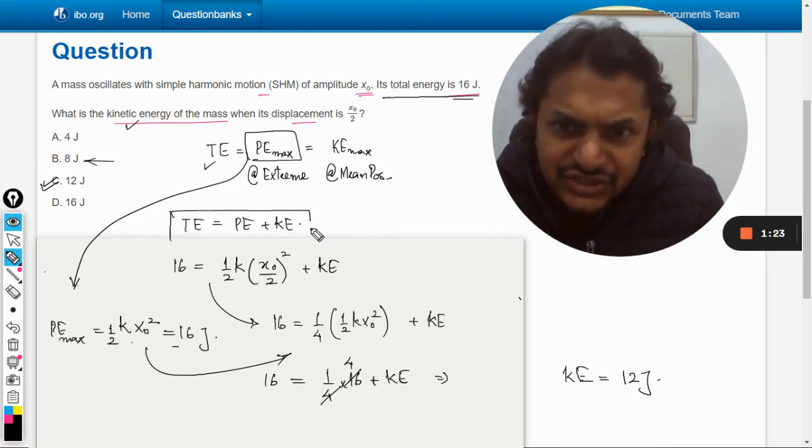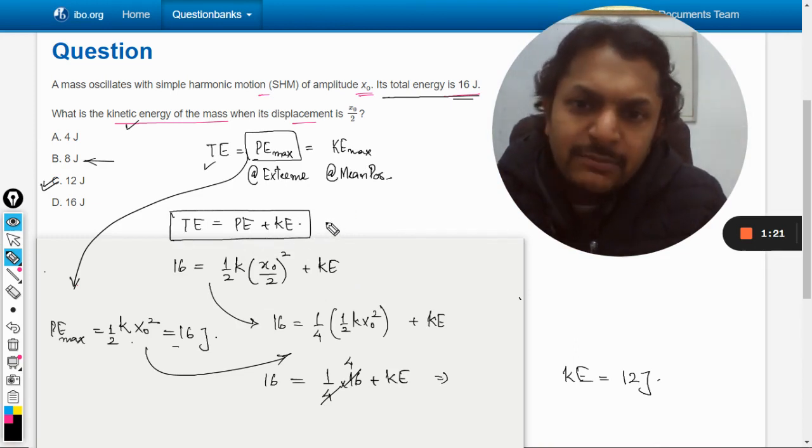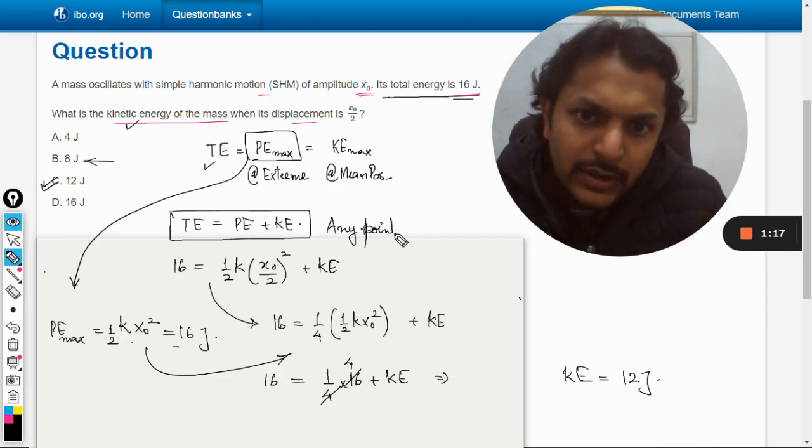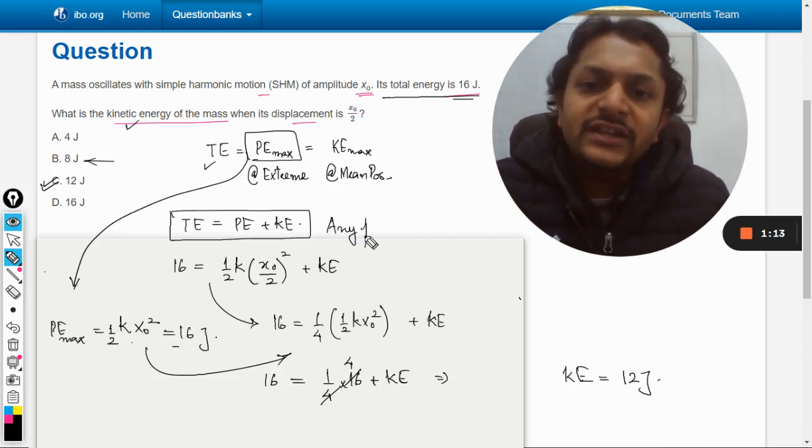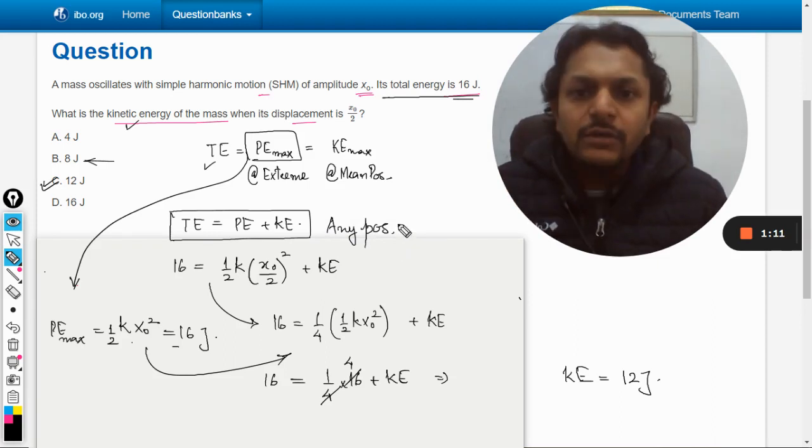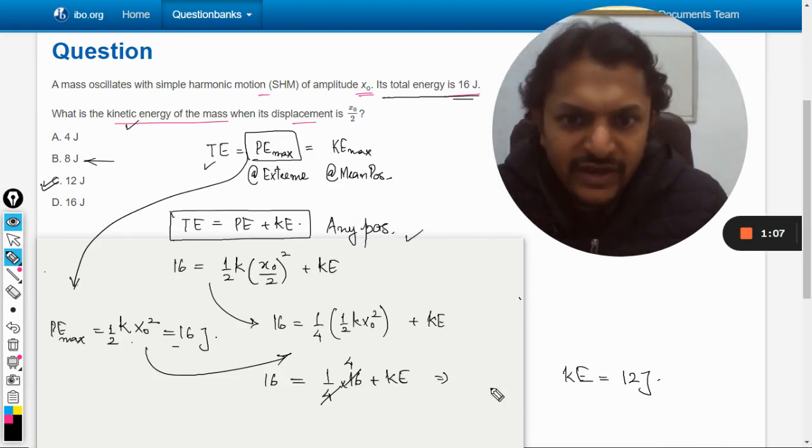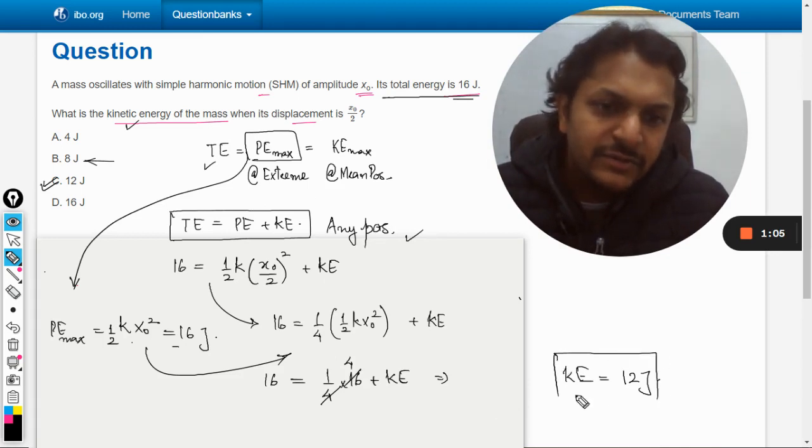This is a general formula I can say which can be applied at any point, at any position, not only at the extreme position or mean position, but at any position. And thereby I substituted the values and I found that kinetic energy will be 12.